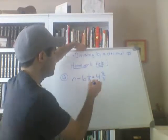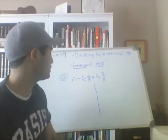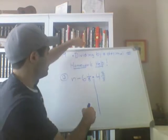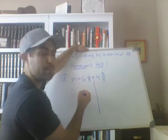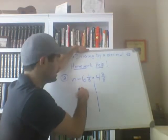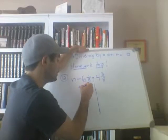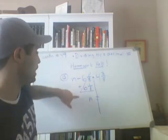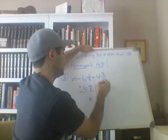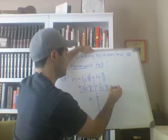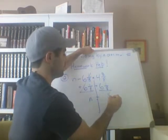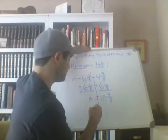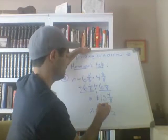Here's the algebra problem: n minus 6 and 1 eighths equals 4 and 3 eighths. Start on the side with the variable, which is the left-hand side. It's opposite subtraction — opposite subtraction is addition. The reason I do the opposite is so this cancels out and I isolate my variable n. If I add 6 and 1 eighths to this side, I've got to add 6 and 1 eighths to the other side. 3 eighths plus 1 eighths is 4 eighths. And 4 plus 6 is 10. We know that 4 eighths reduces to 1 half, so your answer is n equals 10 and 1 half.